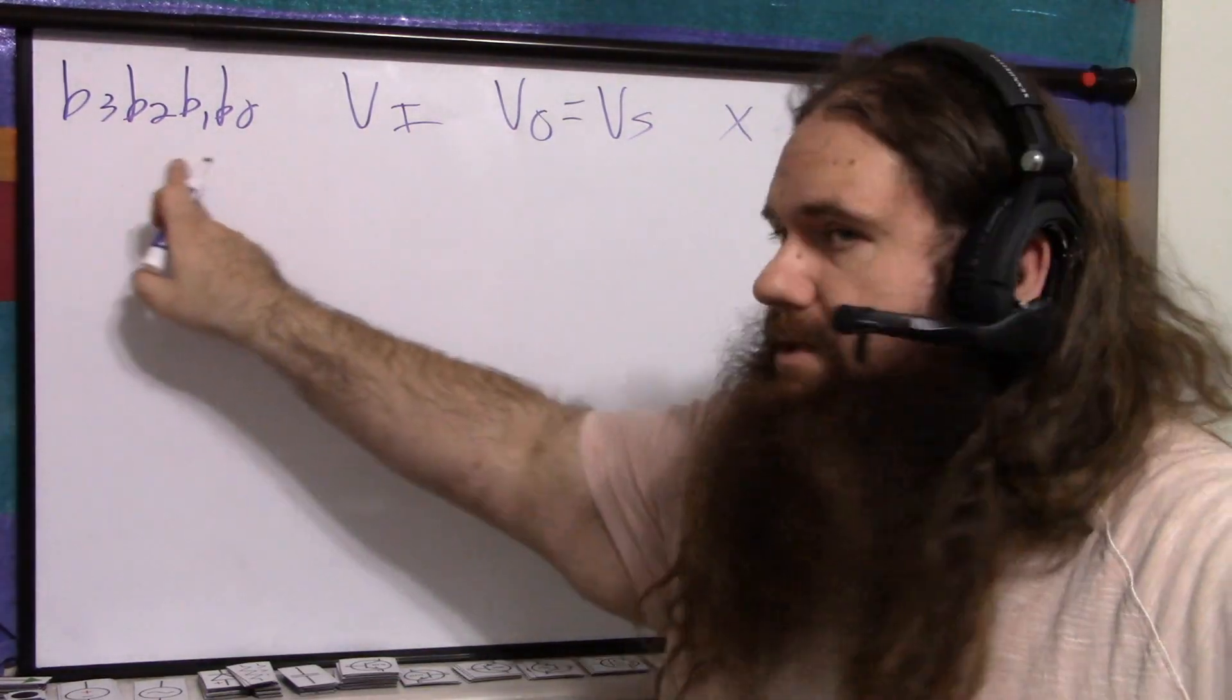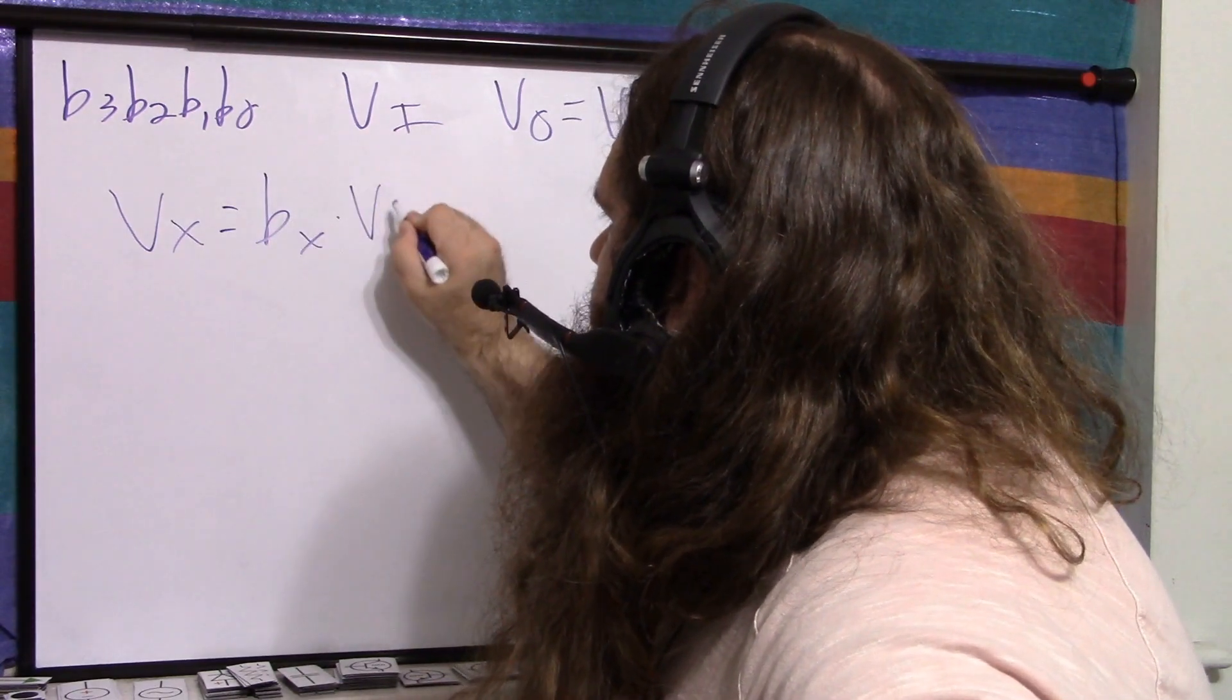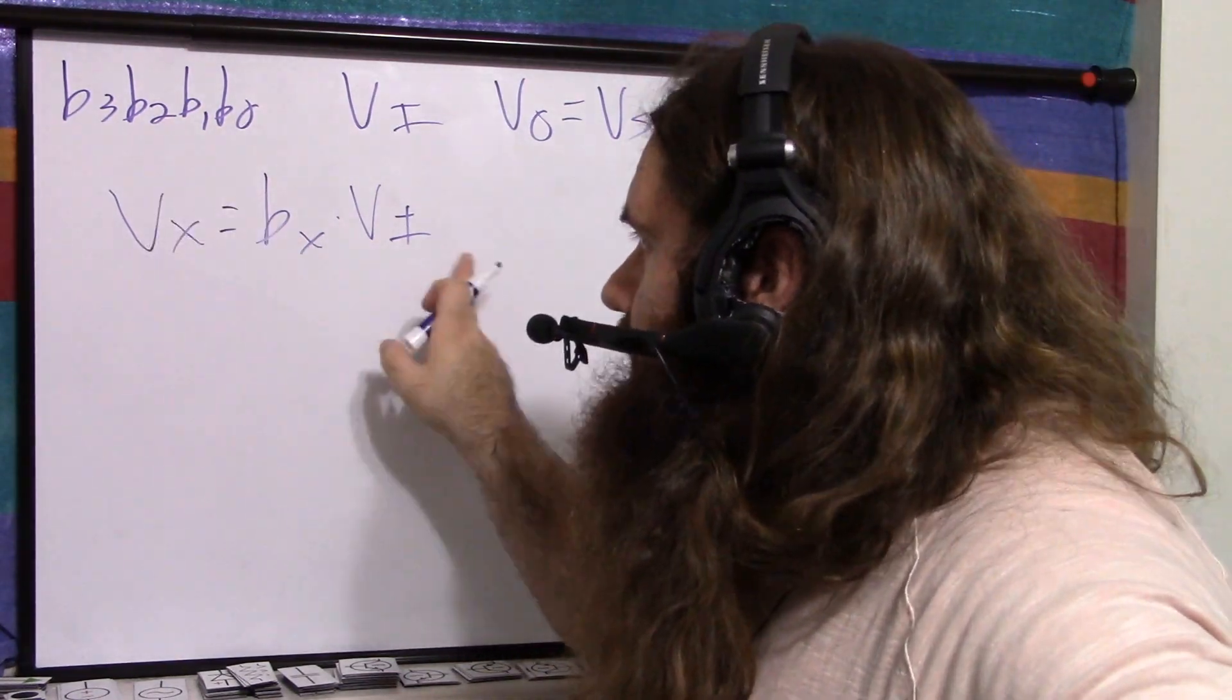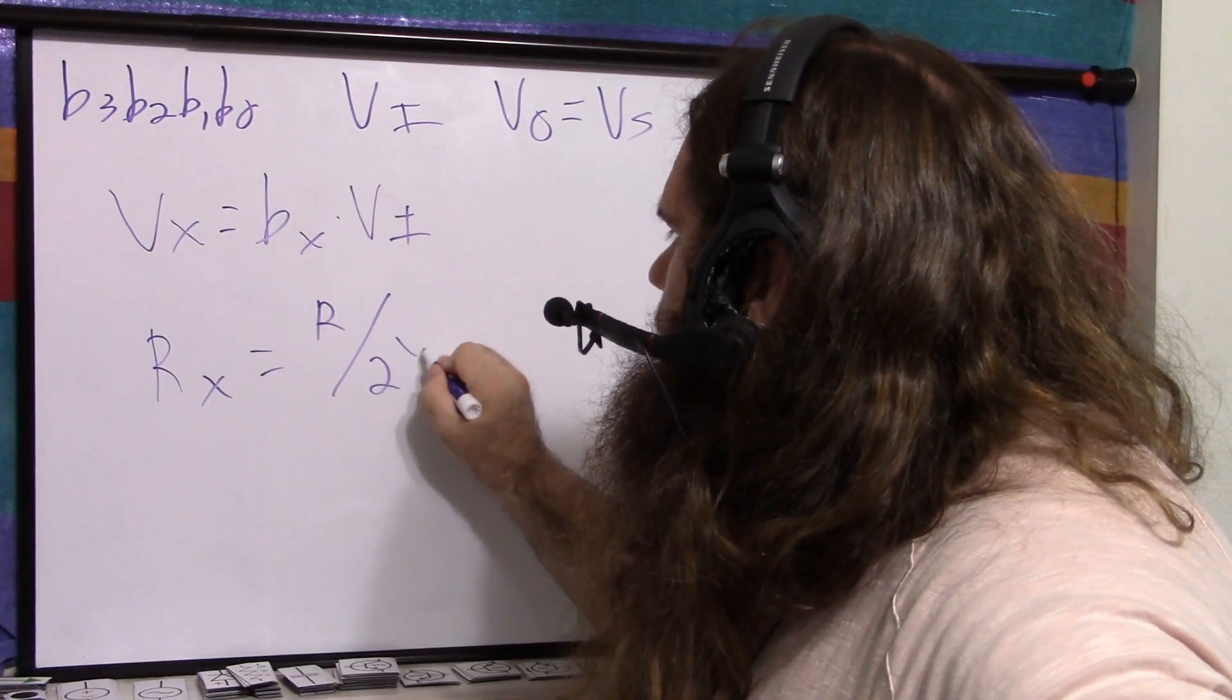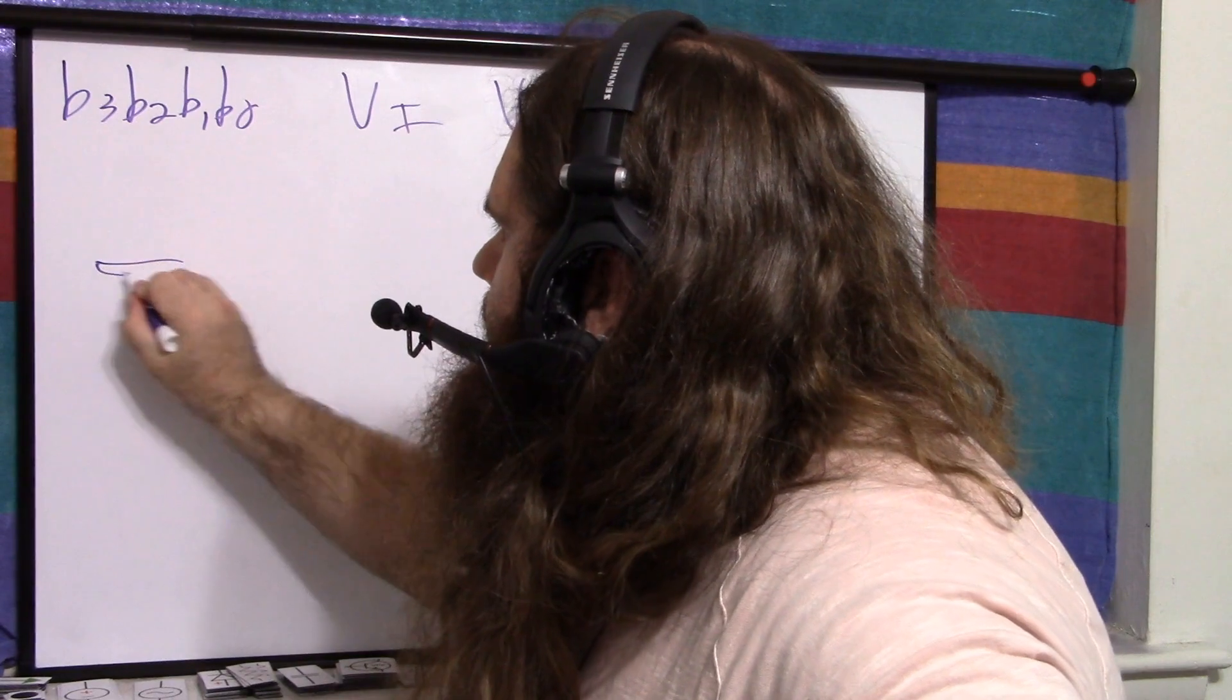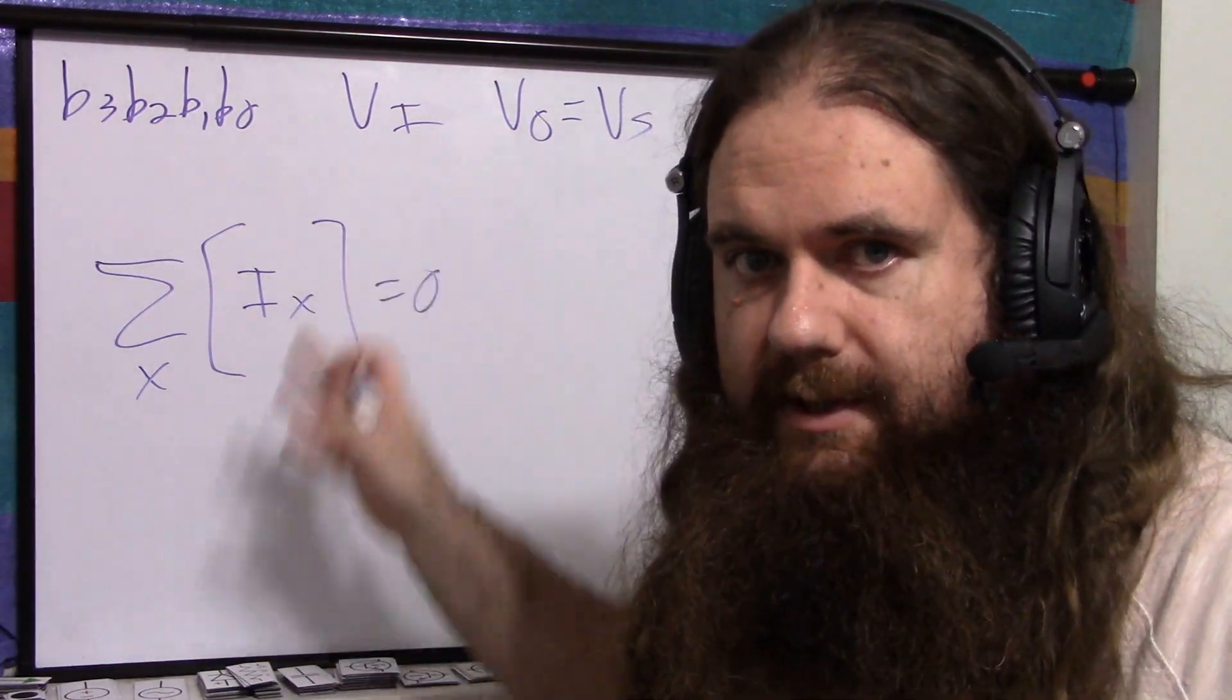Let's say we have X. X is just zero through three. It's an index. So let's say we have VX equals BX times VI. This is the digital logic signal. If the bit is one, then the voltage is the input voltage. And if the bit is zero, the voltage is zero. RX is just R over two to the X. So we had the resistor ladder. We had R, R over two, R over four, R over eight. There's that. So we have the sum for all X of the current X equals zero. We're saying that there's no current in or out of the op amp, so all the net current must be zero.